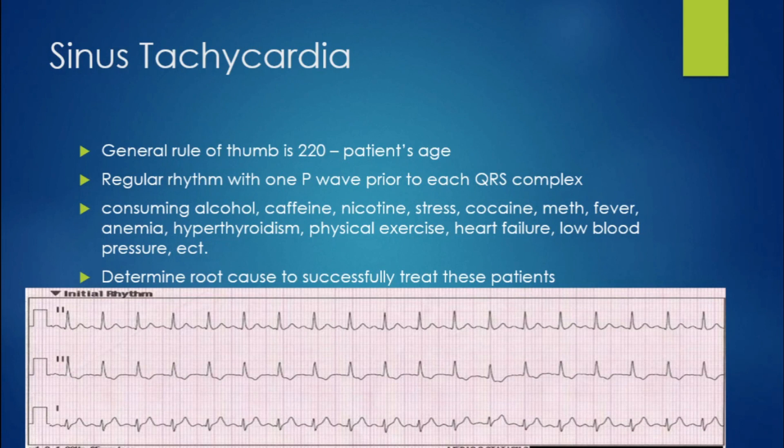Sinus tach is the most common rhythm and we should see it a ton. The general rule of thumb for sinus tachycardia is 220 minus the patient's age — that's a good way to figure out if it is sinus tach or another rhythm. On a 12-lead, this will be a regular narrow complex, unless you have aberrancy like a bundle branch block, with a rate over 100 and a one-to-one P to QRS ratio. To treat this rhythm, you need to figure out the root cause — is it anxiety, dyspnea, or shock? Treat the underlying issues and you'll inherently fix the sinus tach.